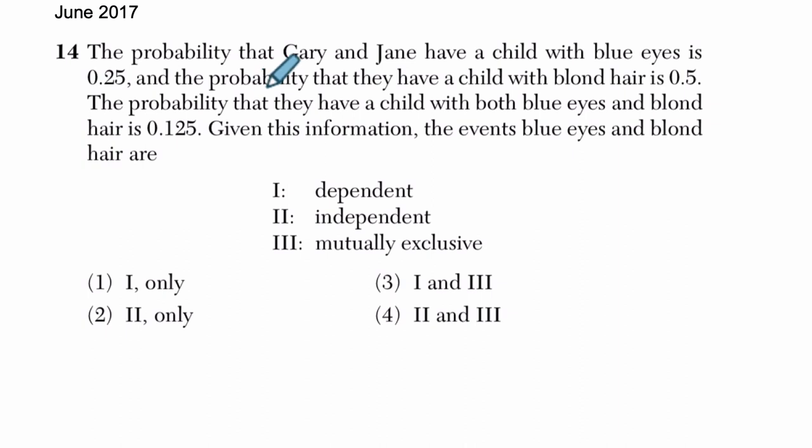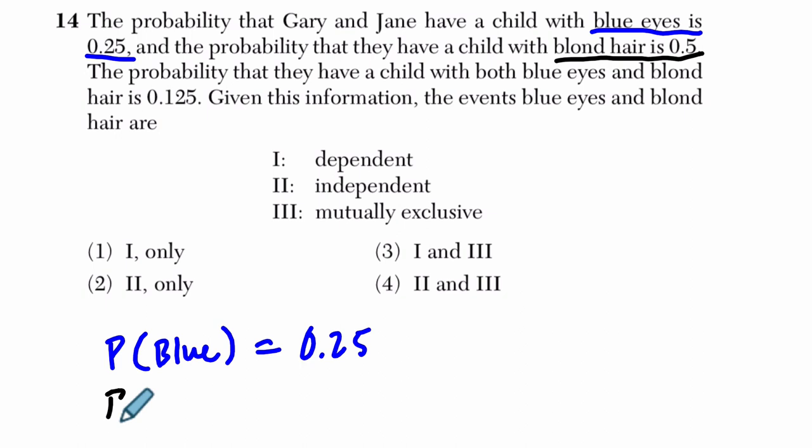Let's read it. The probability that Gary and Jane have a child with blue eyes is 0.25. The probability that they have a child with blonde hair is 0.5.